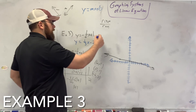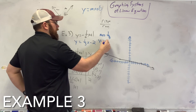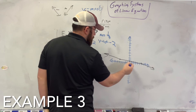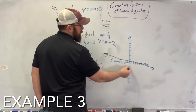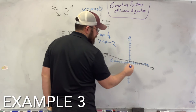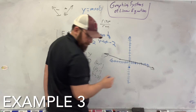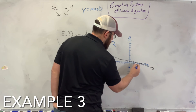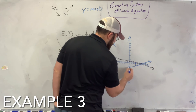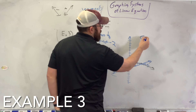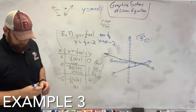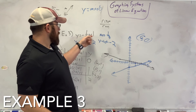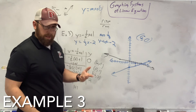Now I'll graph the second line using slope-intercept form. I start at y-intercept negative 2 with a positive slope of 1 over 3 — rise 1 over run 3. They cross right at (6, 0), so that is the solution. Plugging 6 and 0 into both equations gives 0 each time — it's the one answer they both have in common.